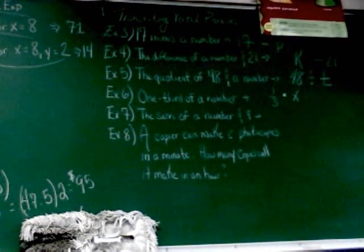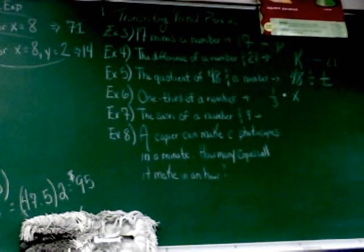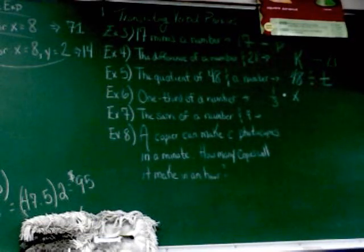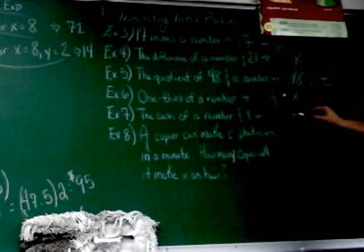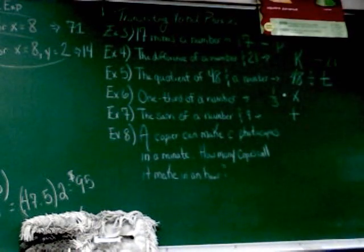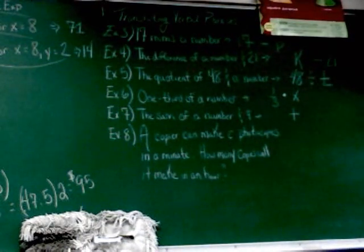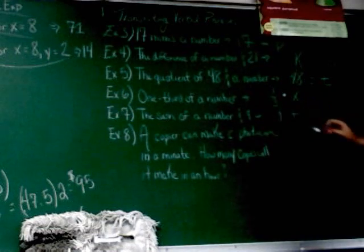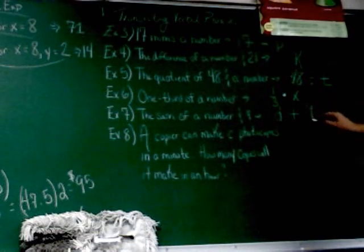The sum of a number and nine. Where does sum fit on the list? Dale. Sum is an addition problem. We've got a number first, so Dale, pick the variable. D. And then nine. There you go.